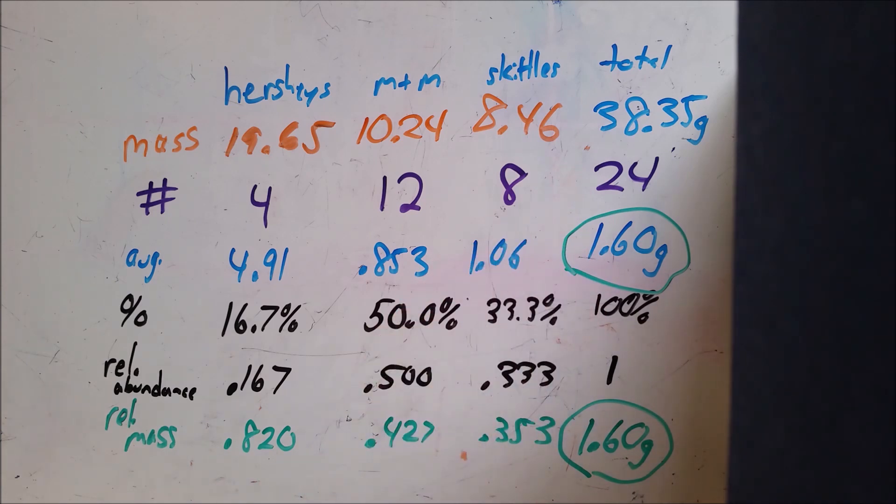now we're using percentages in the mass of a single particle. And the reason why that's critical in chemistry is because in chemistry you can't count up every single atom. There's just too many of them. But you can figure out what percent they occur with, what frequency they occur in nature.